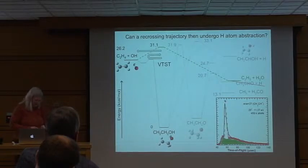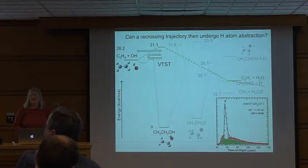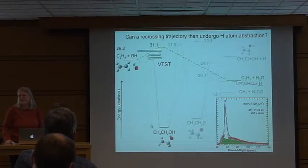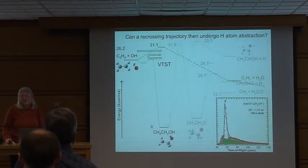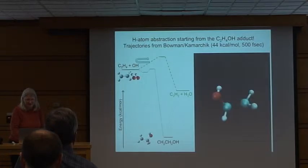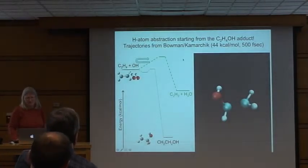There's no way to follow this from an electronic structure calculation or from transition state theory. So experimentalists, when they see something weird, they make up a story — and they're never held to it. But Joel Bowman is also funded by DOE. I wrote to him and said this kind of mechanism is possible. He said, 'Lori, you're a little late — I've been working on this for six months. We're going to publish a paper in a couple of weeks. I'll send you a trajectory.' So here's Joel Bowman's trajectory.